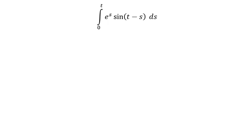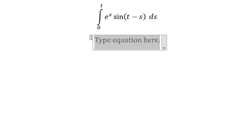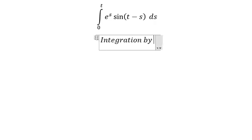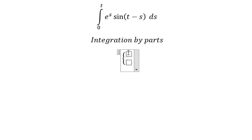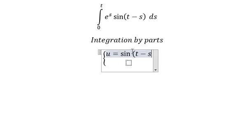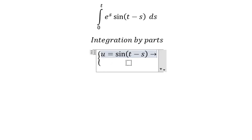Hello everybody, so today I want to show you how to answer this one. We can use integration by parts, so I will put u equals to sine of t minus h. Later we need to do the first derivative for both sides.